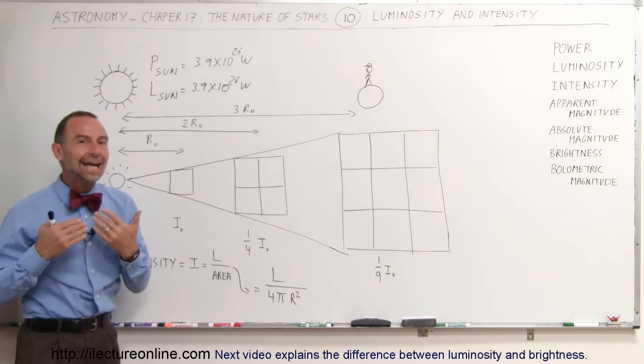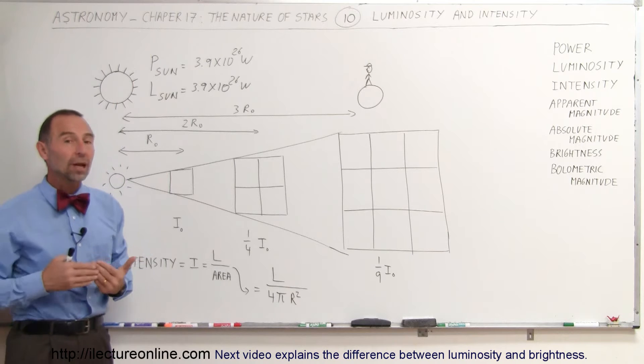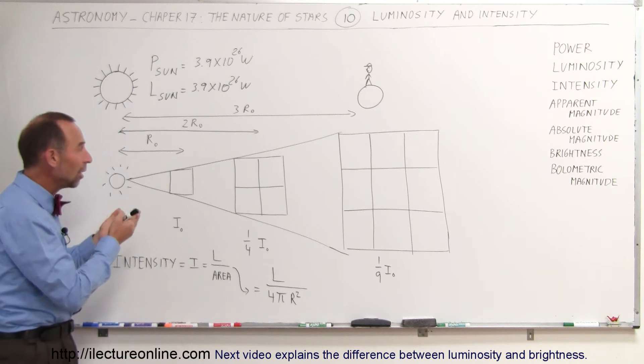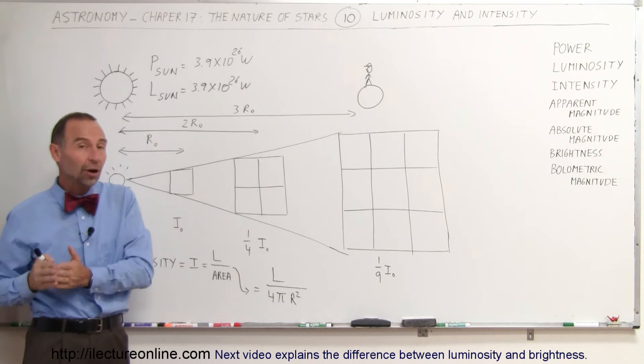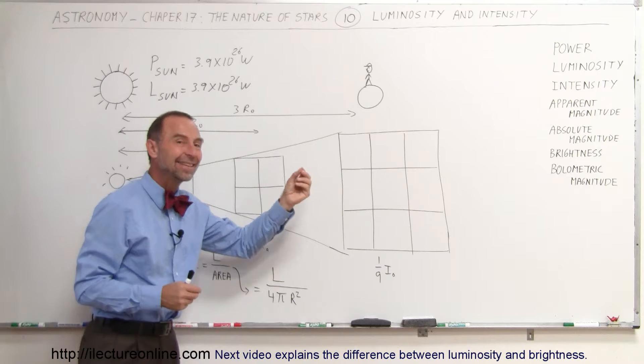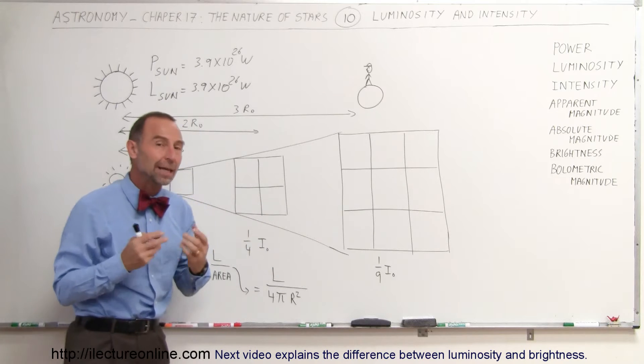So, what do we mean by intensity? How does that relate to the luminosity? Well, the intensity of the energy that we see from the star depends upon how close or how far away we are. The farther away we are, the less intensity, the less intense the light will be.